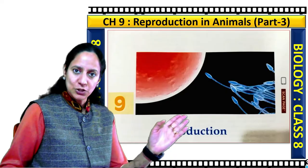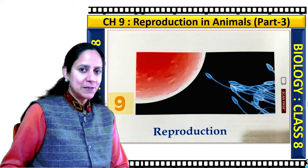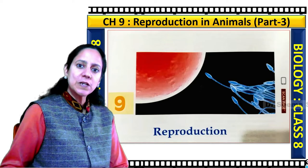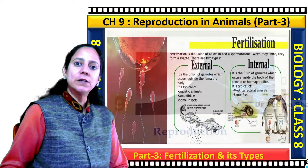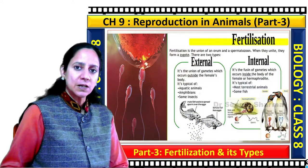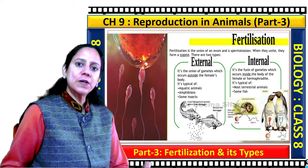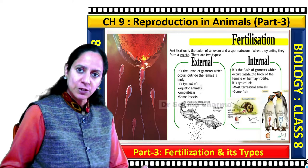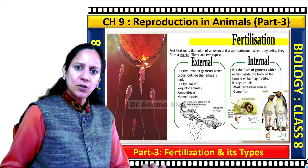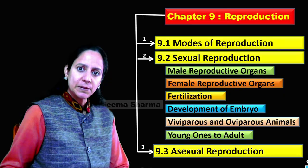Dear viewers, we are on chapter number 9, Reproduction in Animals. I am covering this chapter part wise and in this video I have covered its third part, which is dealing with fertilization, its types and certain other specific terms related to reproduction. Before proceeding, let me show you the basic layout of this chapter.